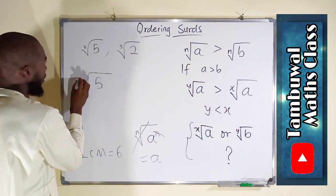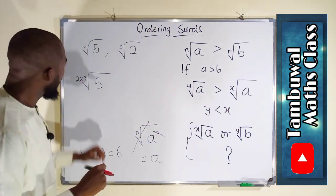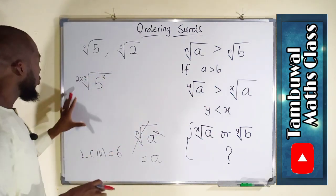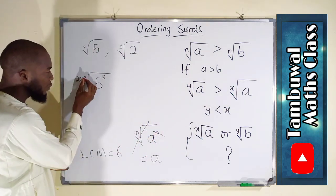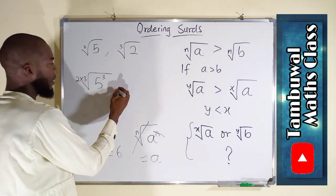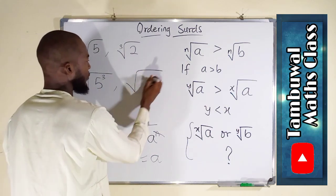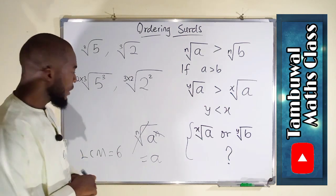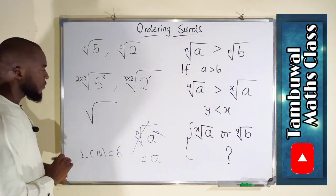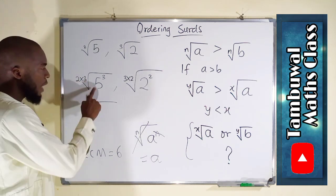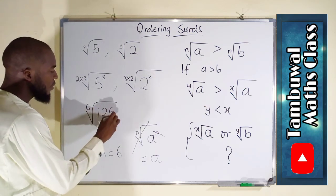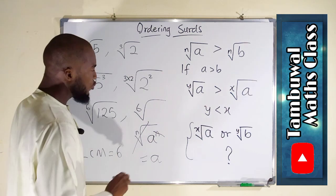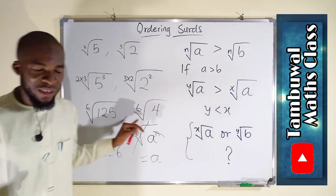To transform degree 2 into 6 we multiply by 3, and accordingly raise the radicand 5 to the power of 3 — because raising to the power 3 will be cancelled by the new degree of 3, so we have effectively added nothing. Similarly, we transform degree 3 into 6 by multiplying by 2, and raise radicand 2 to the power of 2. Now 2 × 3 = 6 and 5³ = 125; the other gives degree 6 and 2² = 4.